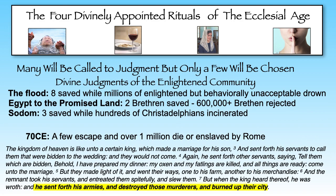We read this in Matthew 22: 'The kingdom of heaven is like unto a certain king which made a marriage for his son and sent forth his servants to call them that were bidden to the wedding and they would not come. Again, he sent forth other servants saying, Tell them which are bidden, behold, I have prepared my dinner, my oxen, my fatlings are killed and all things are ready, come unto the marriage. But they made light of it and went their ways, one to his farm and another to his merchandise, and the remnant took his servants and entreated them spitefully and slew them. But when the king heard thereof he was wroth and he sent forth his armies and destroyed those murderers and burned up their city.'